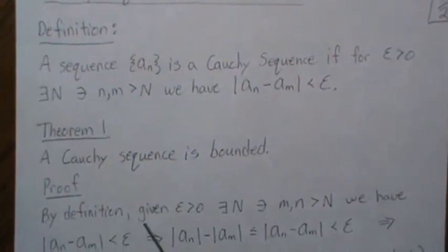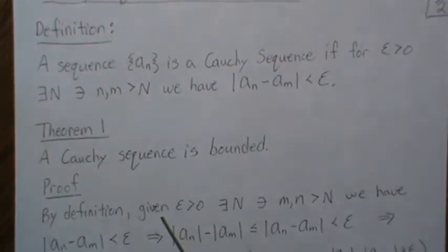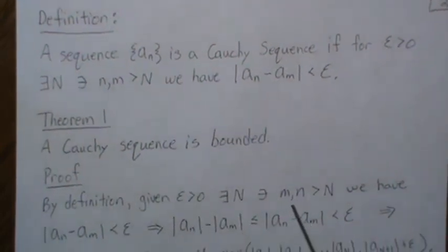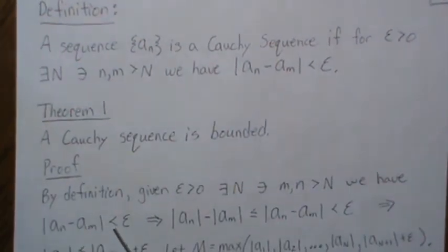So the proof is, by definition, for a given epsilon greater than zero, there exists an N such that m and n are greater than N, we have this property. That's the definition of a Cauchy sequence. But this implies, based upon the absolute value inequality property, this inequality is true. And then we know this is less than epsilon because it's a Cauchy sequence.